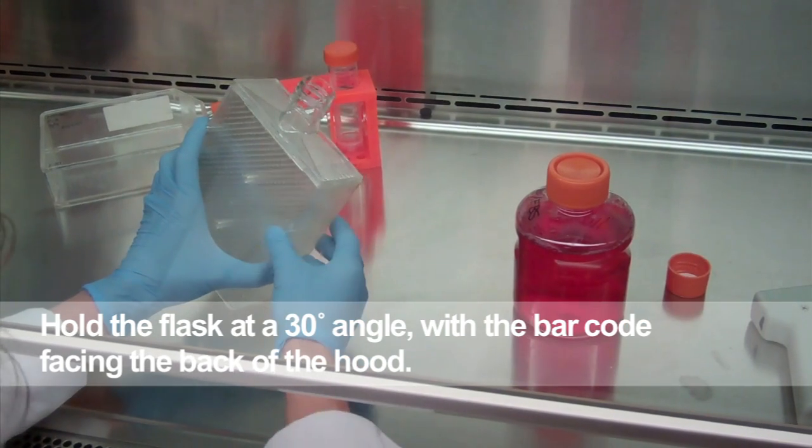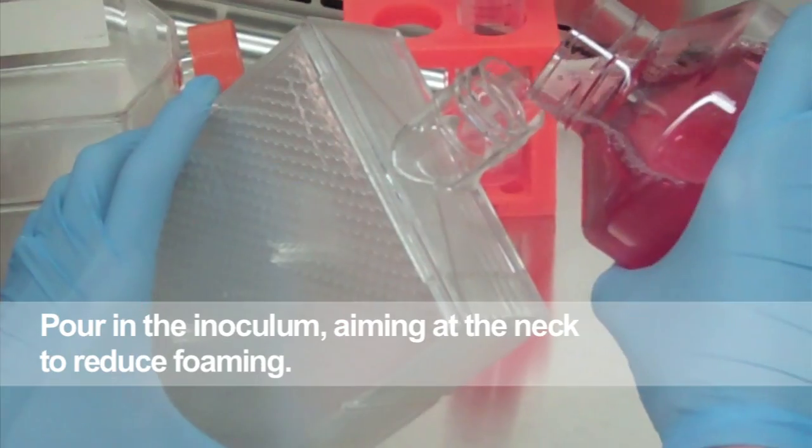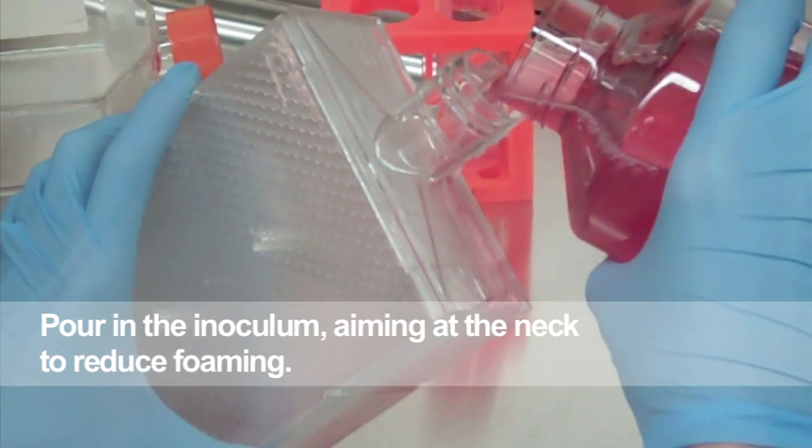When pouring, try to make as much contact with the inside of the flask neck to reduce foaming. You could also fill the entire vessel by using a 100 mL pipette.